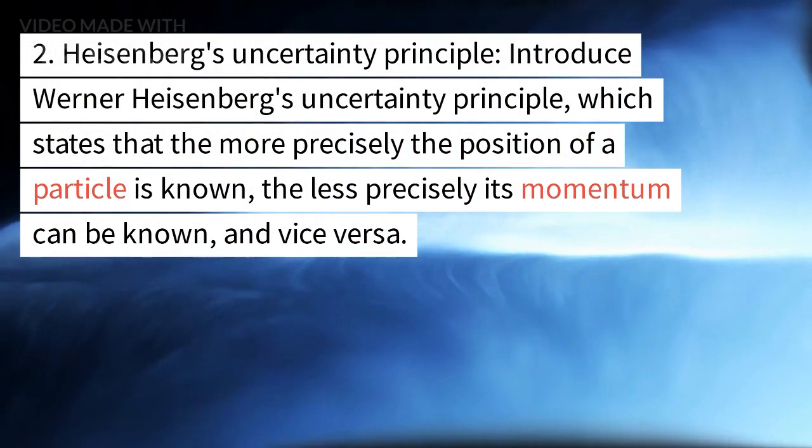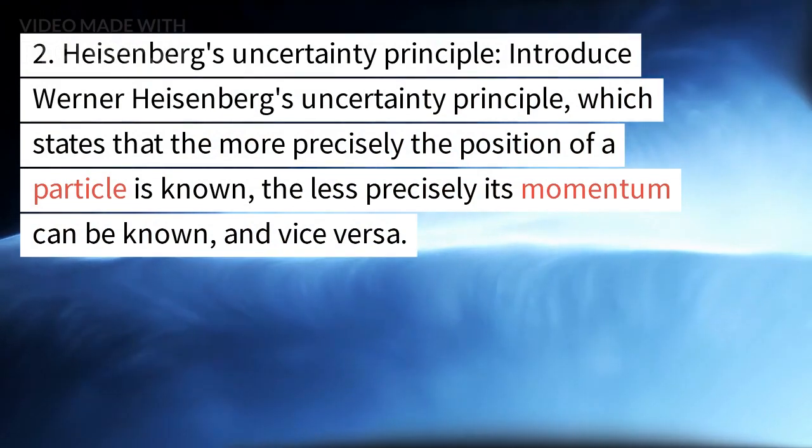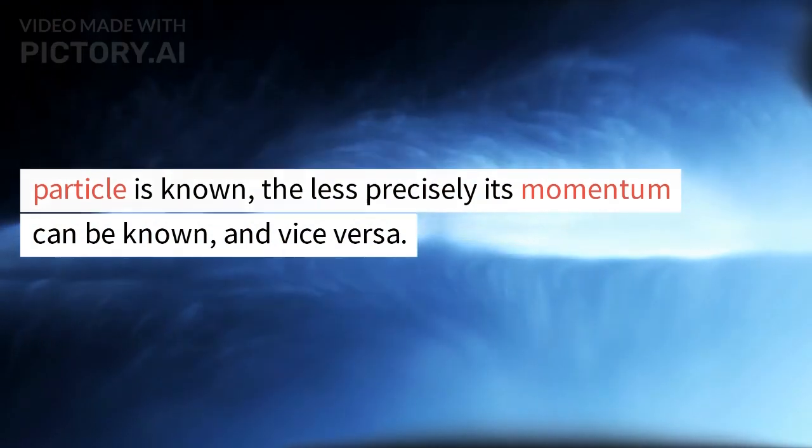Heisenberg's Uncertainty Principle. Introduce Werner Heisenberg's uncertainty principle, which states that the more precisely the position of a particle is known, the less precisely its momentum can be known, and vice versa.